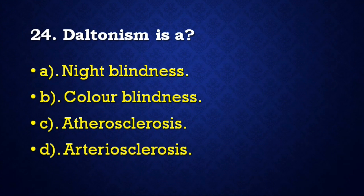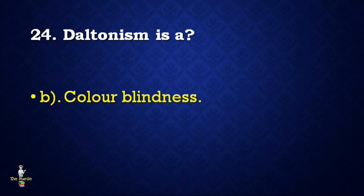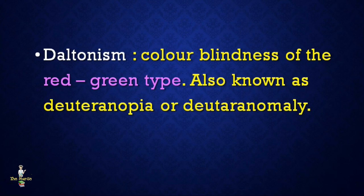Next question: Daltonism is — night blindness, color blindness, or atherosclerosis? Correct answer is color blindness. Daltonism means color blindness of the red-green type, also known as deuteranomia.